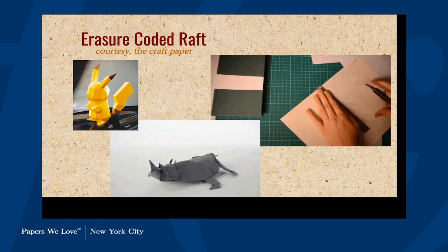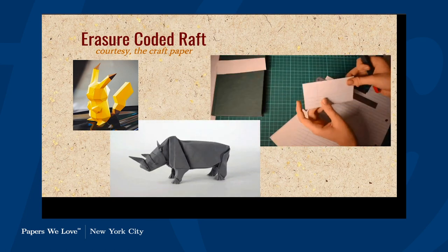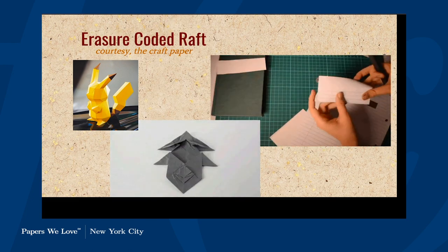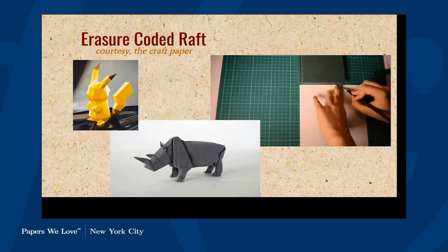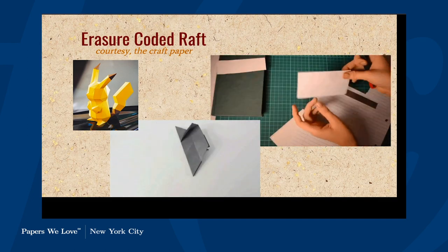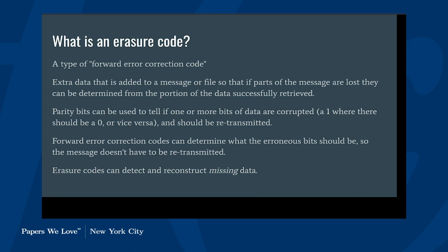What we are talking about today is the CRAFT paper — which is a really great name, but also makes it completely impossible to search for. We have a link in the Twitch page. CRAFT is titled 'An Erasure Coding Supported Version of Raft for Reducing Storage Cost and Network Cost.' The first important part of understanding what the difference is from normal Raft is understanding what erasure codes are and why we want to support them.